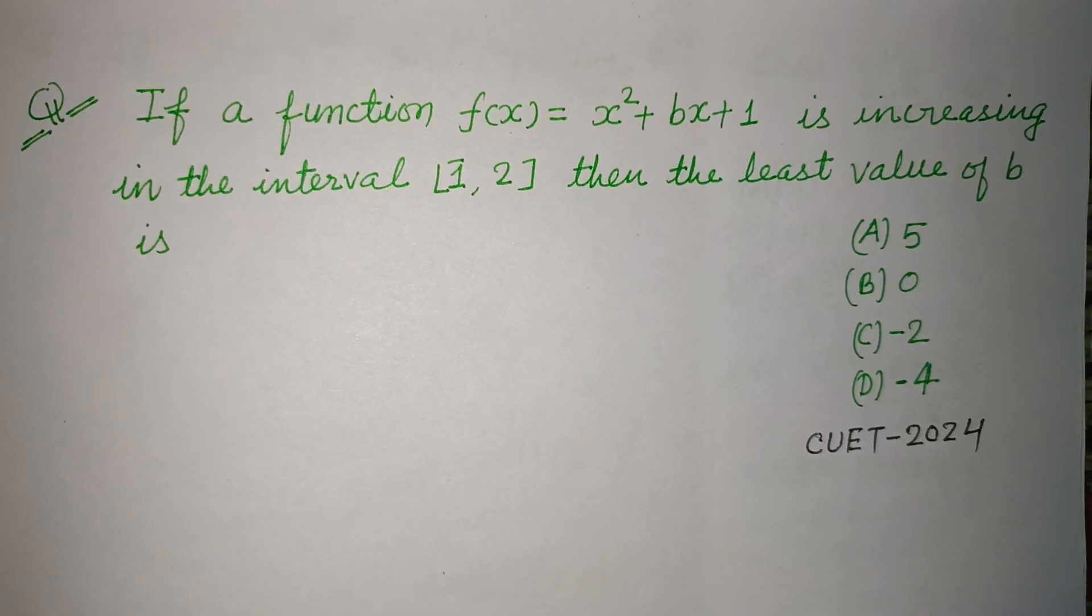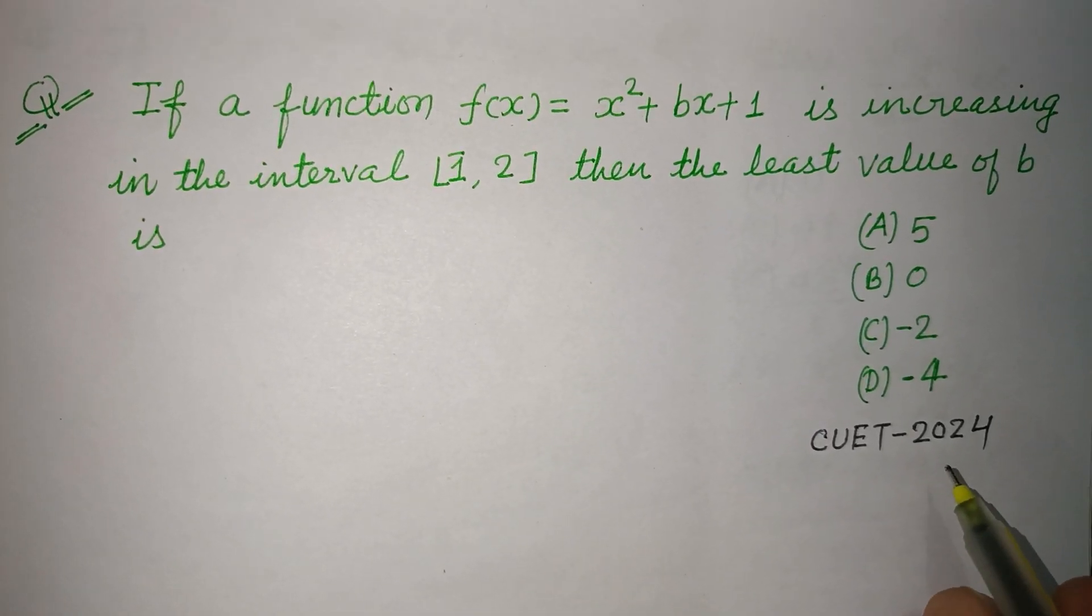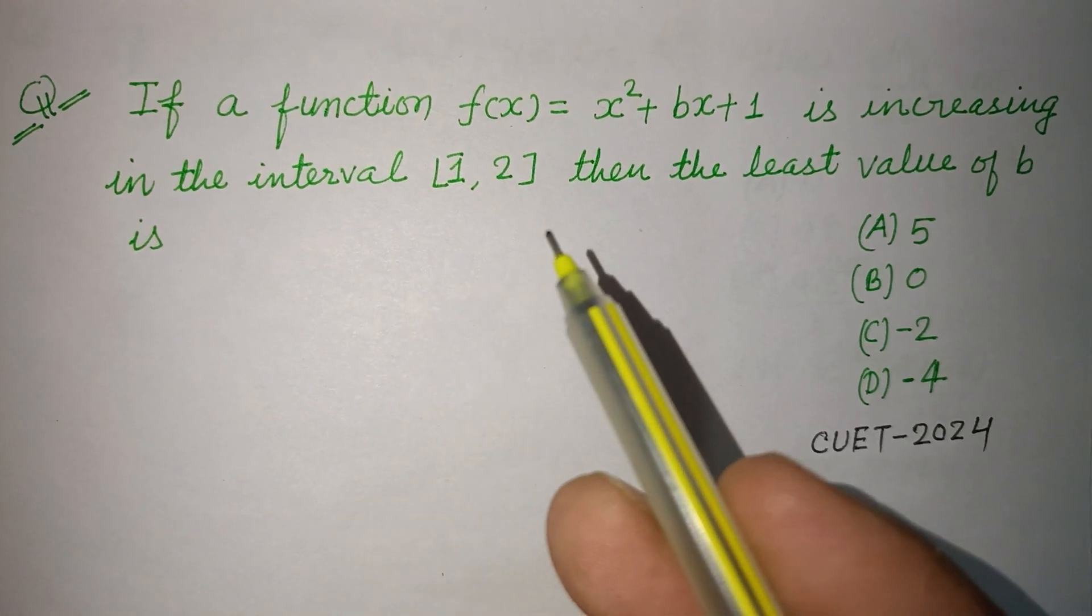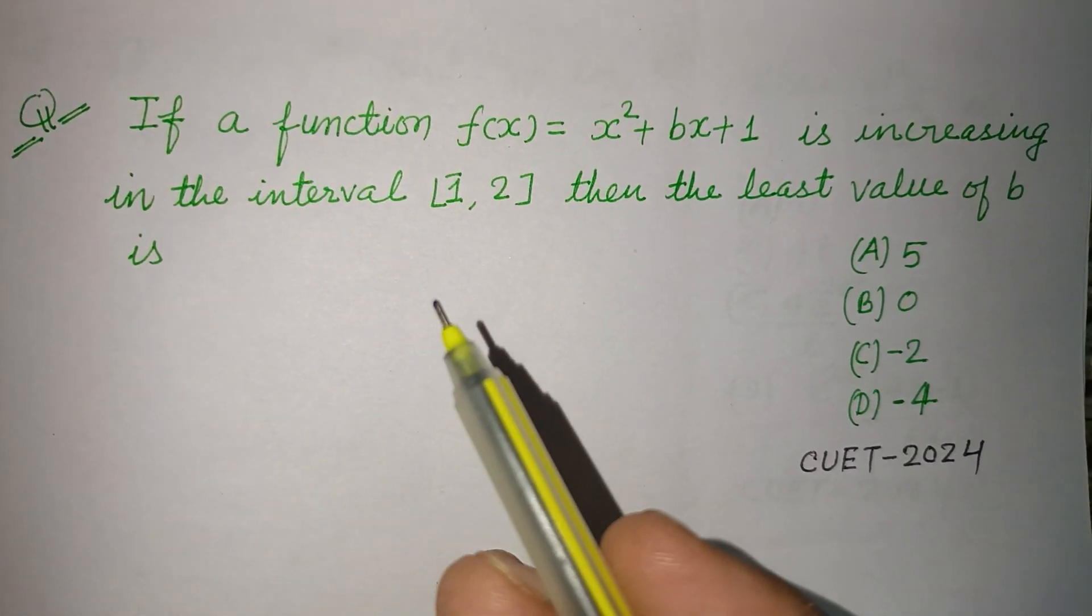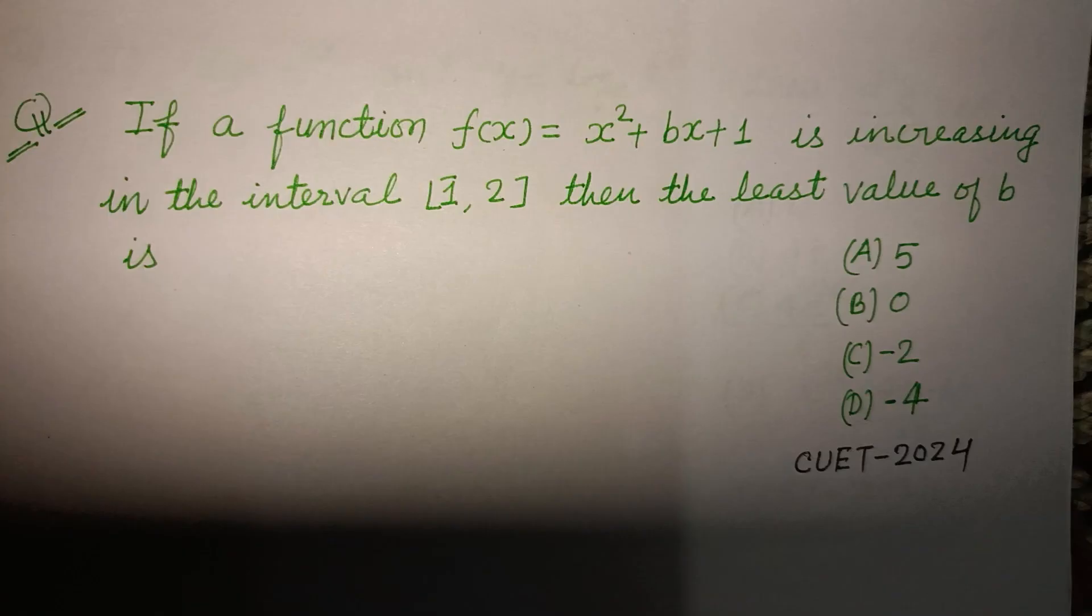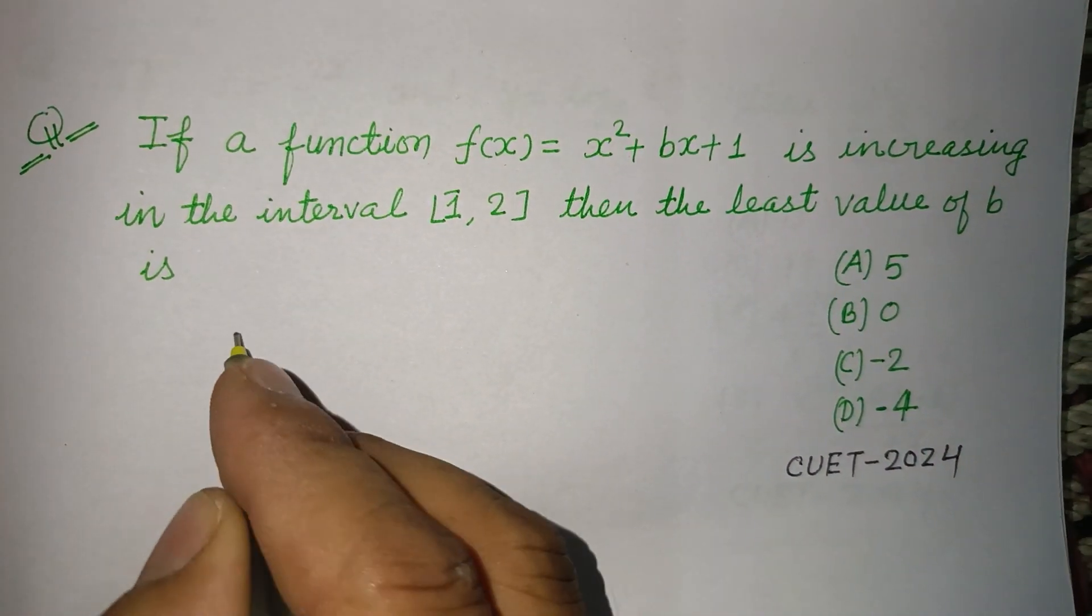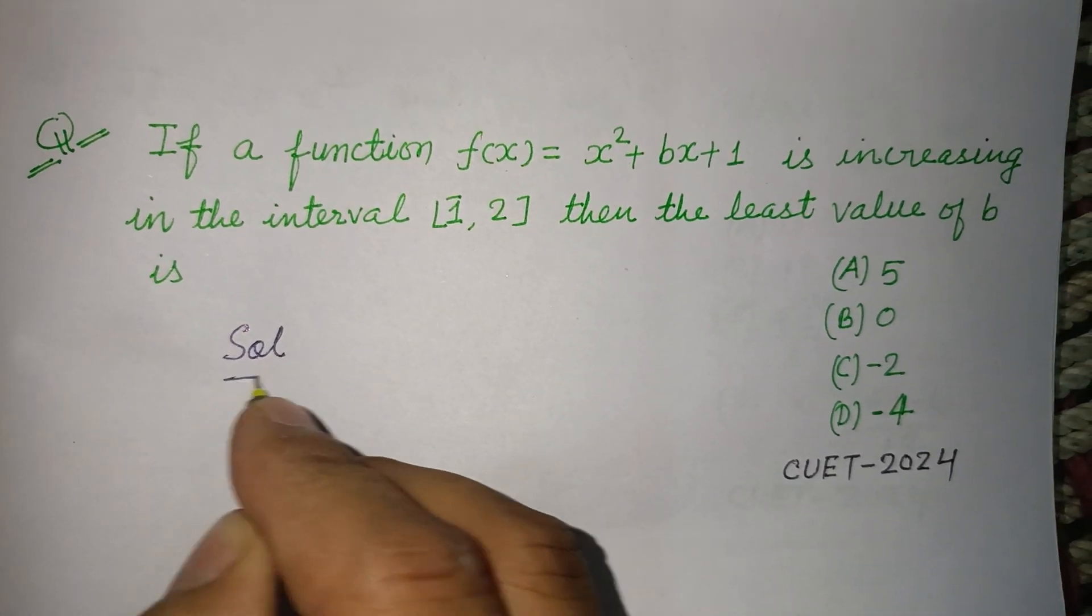Welcome to this YouTube channel. Question from CUET-2024: If a function f(x) = x² + bx + 1 is increasing in the interval [1, 2], then the least value of b is... So students, here f(x) is given to us.